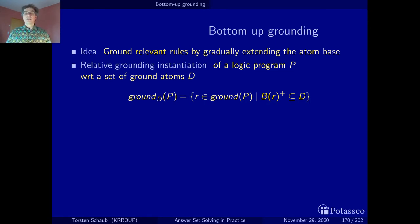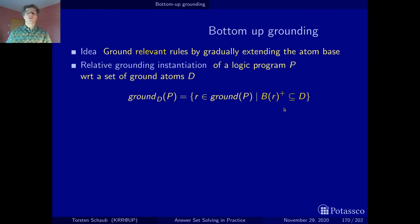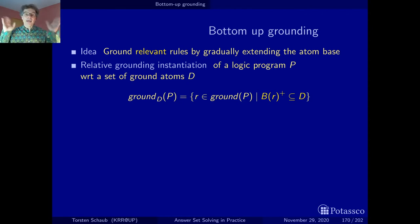When we looked at the Hamiltonian cycle example, we started with the facts, and in this way we make sure there is more or less a derivation of the relevant ground rules from the facts. If we iterate this properly, we also ensure that all rules accumulated in the iteration have a derivation via the positive rules from the facts. But this is hand-waving and becomes clearer when we look at the algorithm, which we will do in a moment.